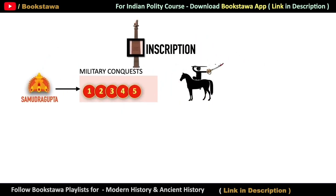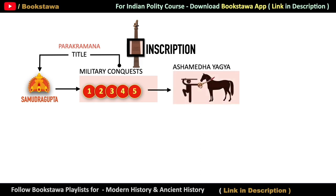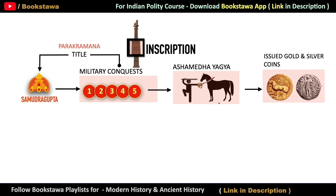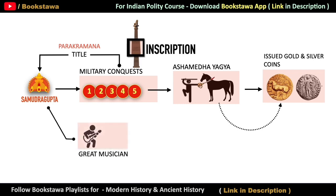After the success of his military conquests, Samudragupta took the title of Parakramanka. To celebrate his military conquest, he performed the Ashwamedha Yagya and issued gold and silver coins as well. There is a gold coin on which the motif of the horse of the Ashwamedha Yagya is made. It has also been mentioned in the Allahabad pillar inscription that Samudragupta was a great musician as well as a great poet, and that is why he is also called Kaviraj.